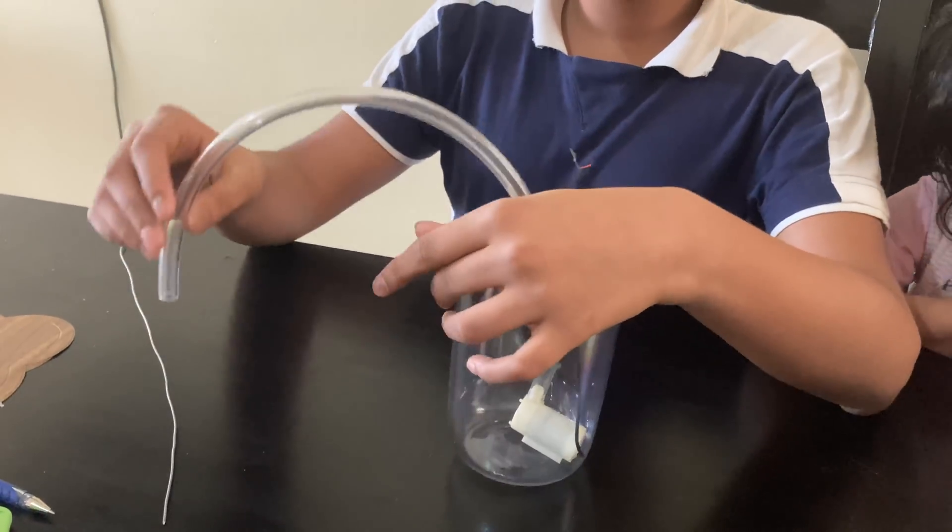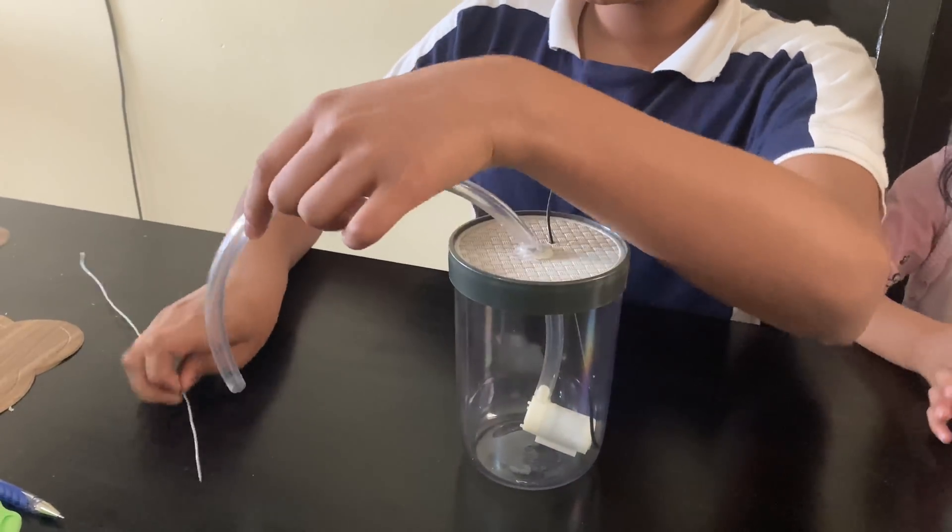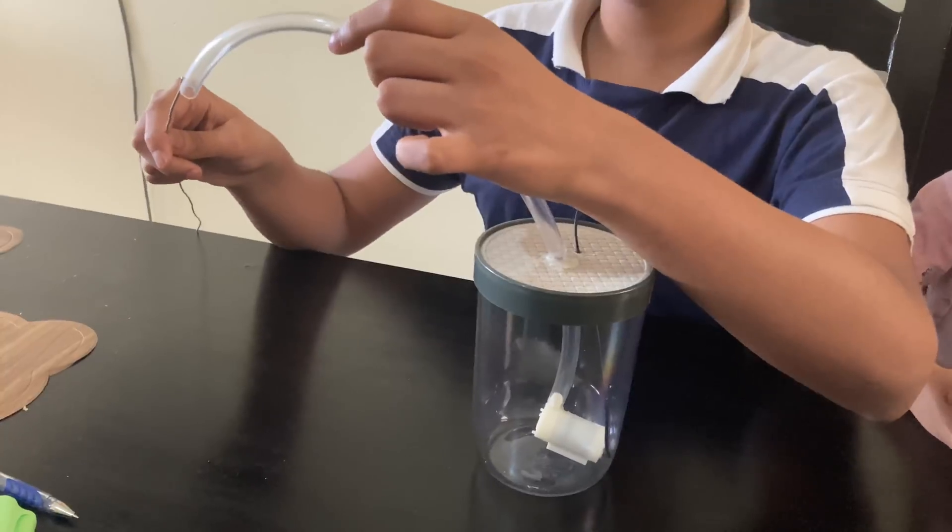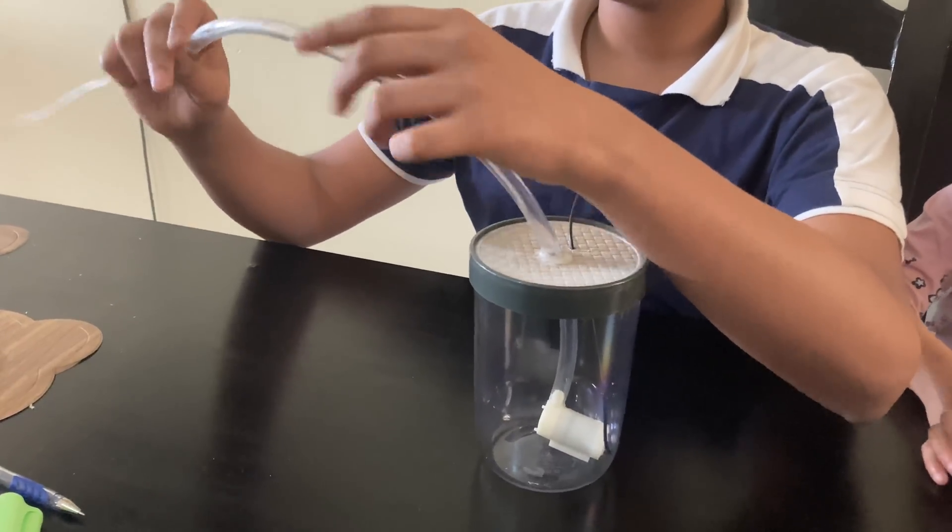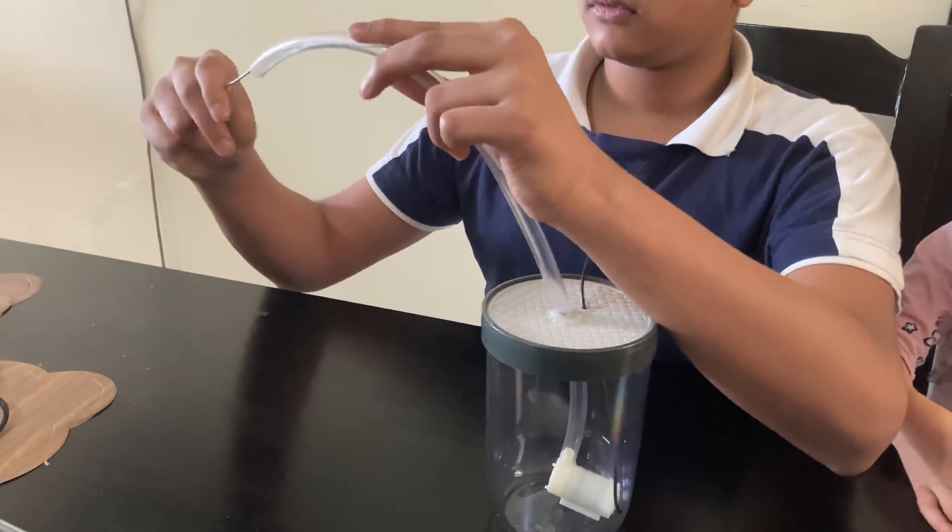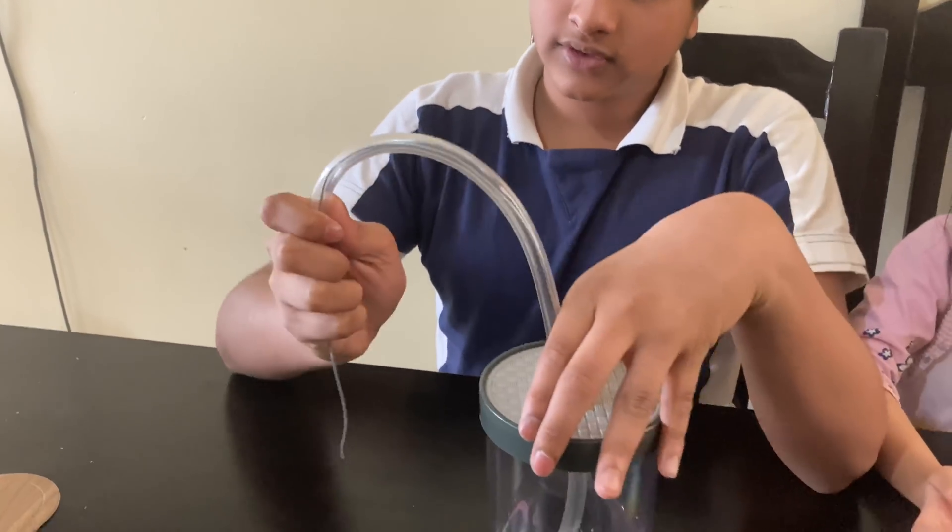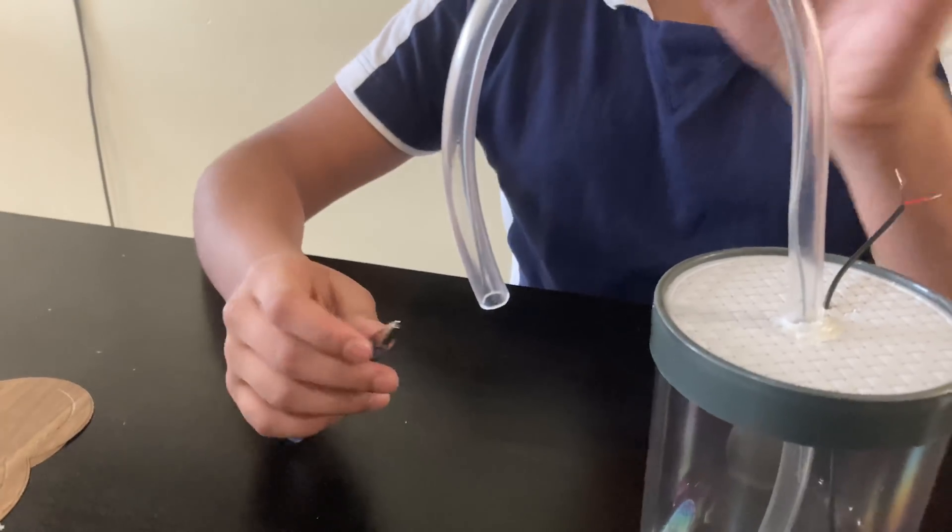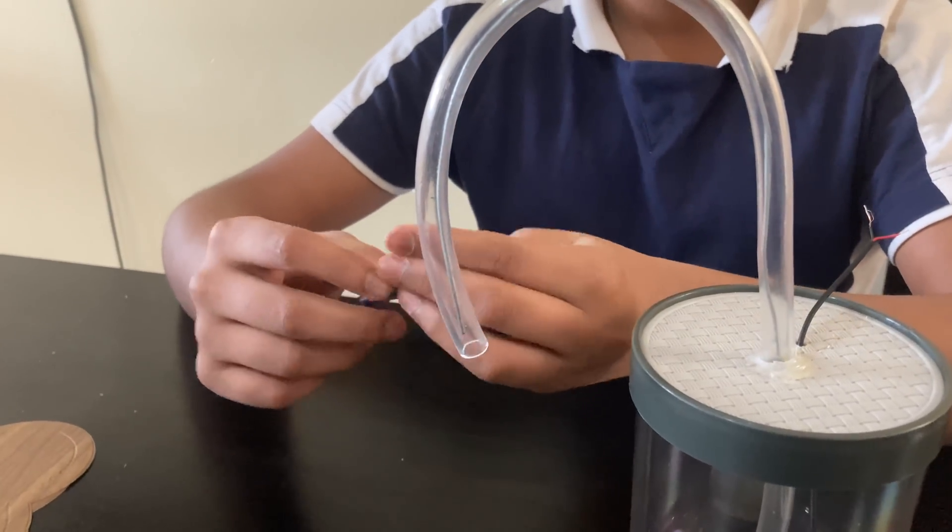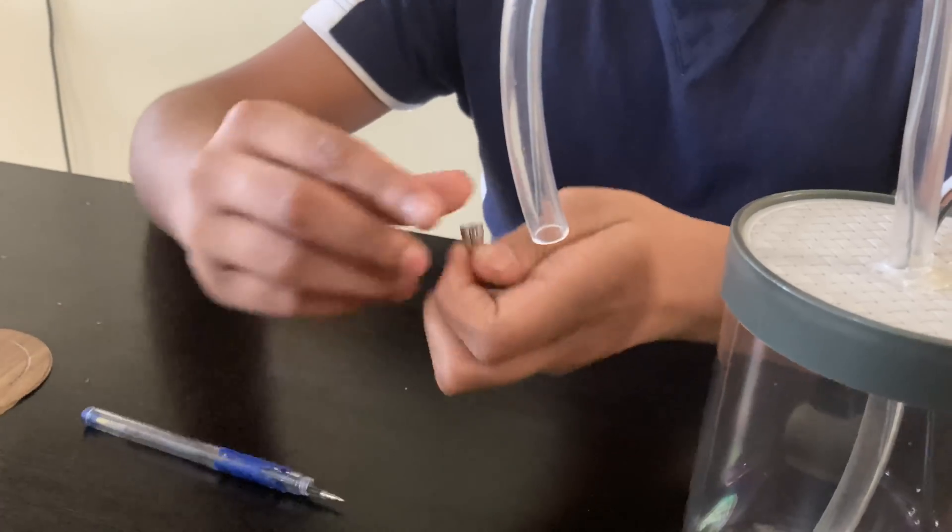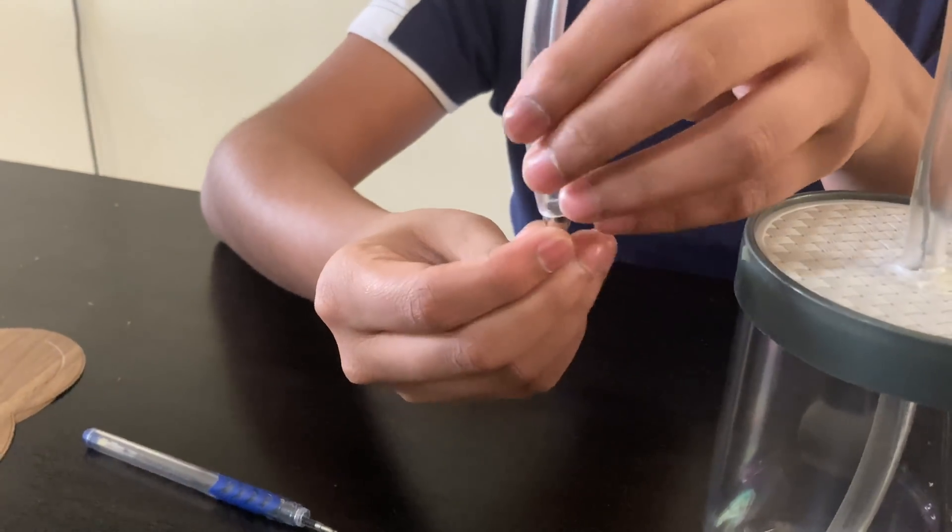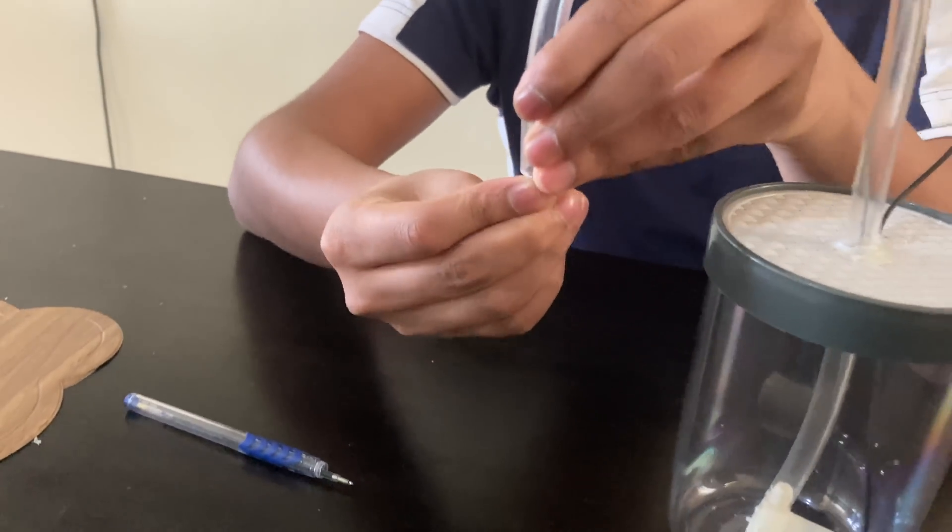Okay because this pipe is not firm to make it firm I'm going to put an aluminium wire inside and then after that just bend it to the required shape. Okay so I can control the flow of the sanitizer that will come out. I'm taking a pen top and fixing it on the end of the pipe.